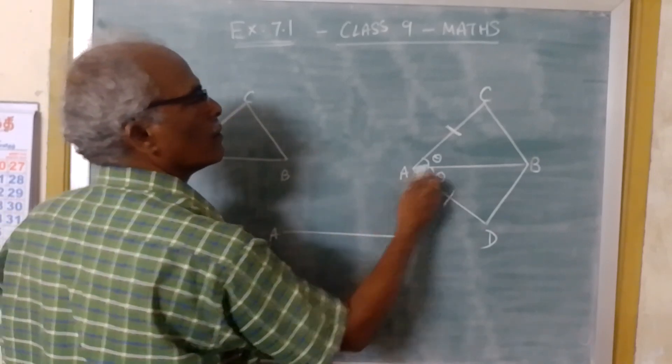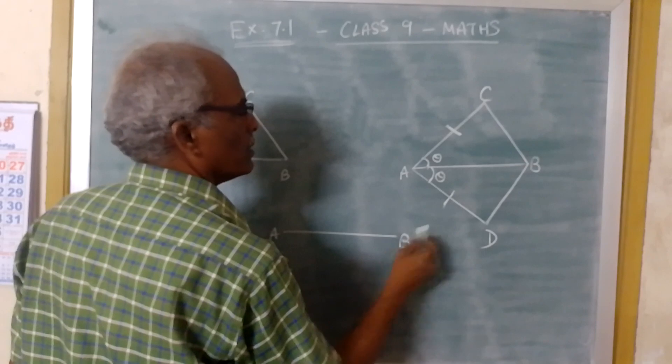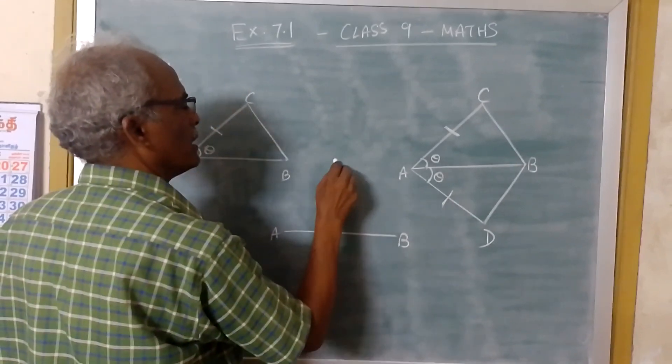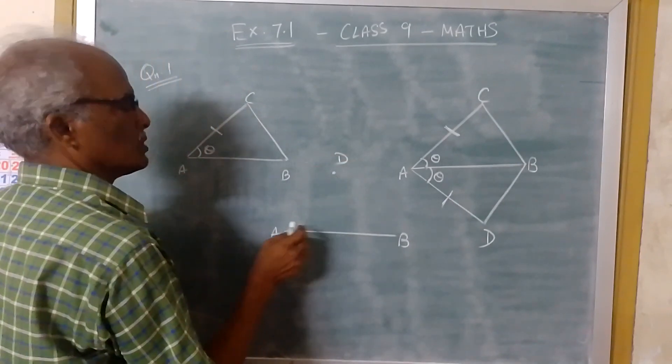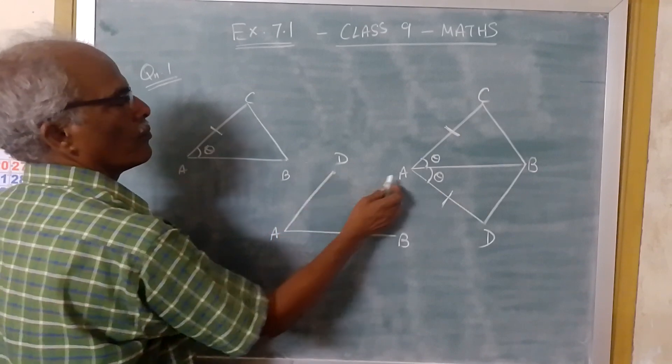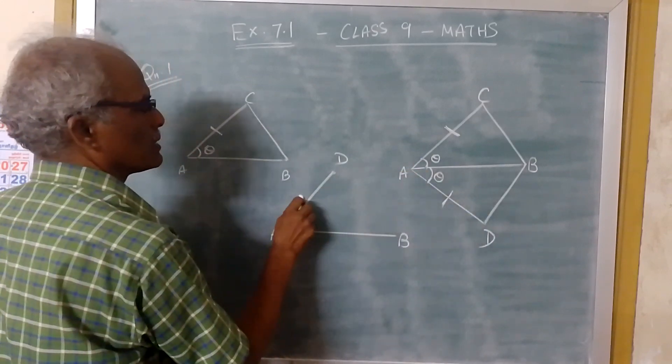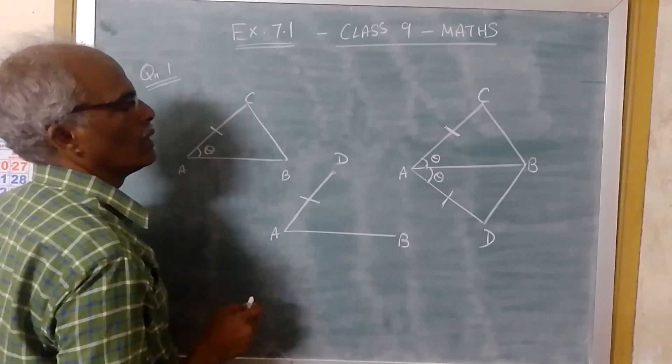So A, then you have B. D is here, so I am marking D here. So A to D, this side. AD and AC are equal.